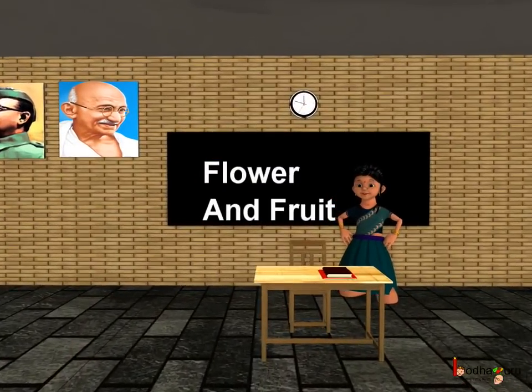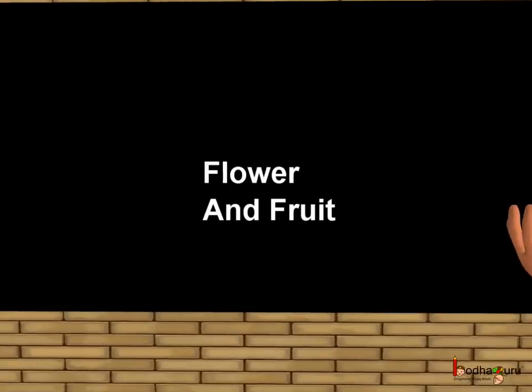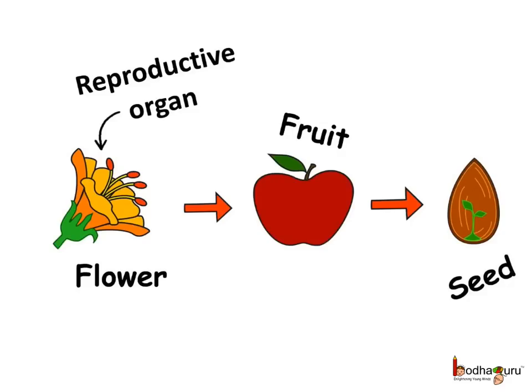Good morning children. Today we shall learn about the flower and the fruit. A flower is called the reproductive organ of the plant, but we know a new plant is born from the seed of the fruit. Then how is the flower a reproductive organ? To understand this, we need to know more about the flower.